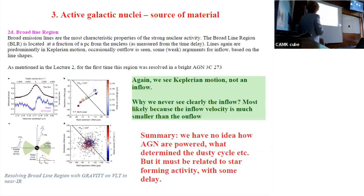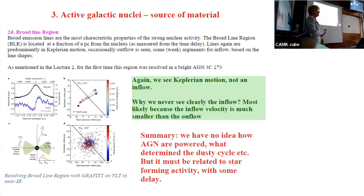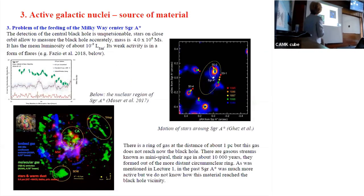For the broad line region, we now resolve it, and here again we see Keplerian rotation — we do not see inflow from the broad line region. Occasionally when analyzing shapes of lines in the broad line region, we may have arguments for inflow or outflow, but this is not really reliable because it depends on radiative transfer which is not properly done. As a result, we don't know how AGNs are powered — but they are powered. That's the only answer.